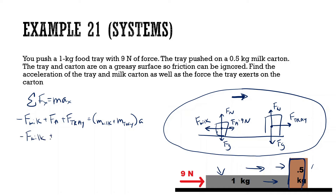Mass of milk is 0.5 kg and mass of tray is 1 kg. We don't know force of milk and force of tray separately, but by Newton's third law, these forces are equal and opposite.